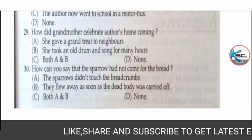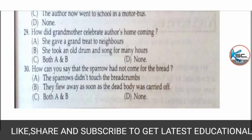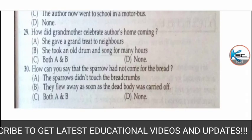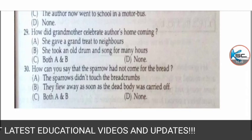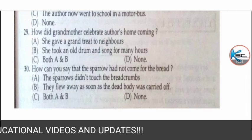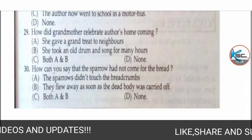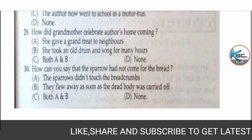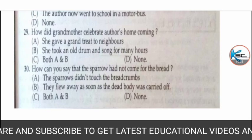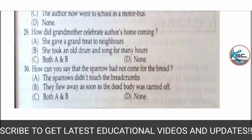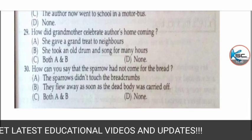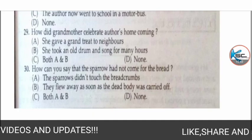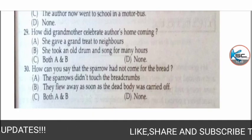Next MCQ: how did the grandmother celebrate the author's homecoming? Options: A) she gave a grand treat to neighbors, B) she took an old drum and sang for many hours, C) both A and B, or D) none. The correct answer is B — she took an old drum and sang for many hours.